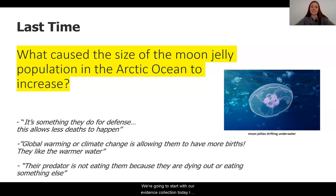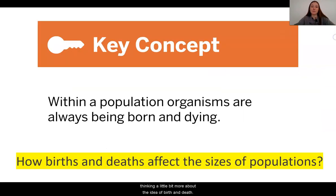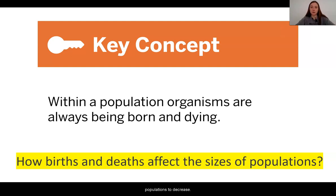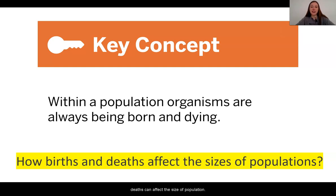We're going to start with our evidence collection today by thinking a little bit more about the idea of births and deaths. Last time, we saw that within a population, organisms are always being born, so populations are growing, but also organisms are always dying, which causes populations to decrease. We're going to take a look today at how births and deaths can affect the size of populations.